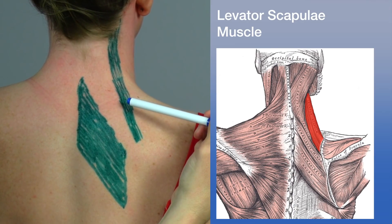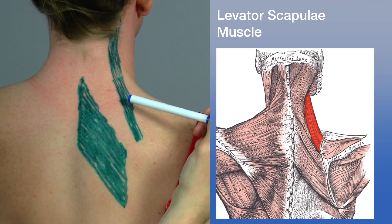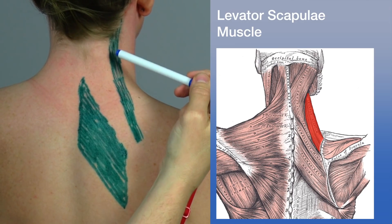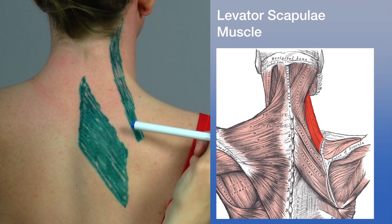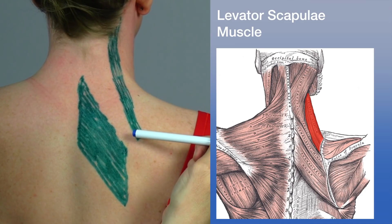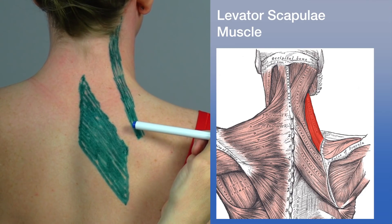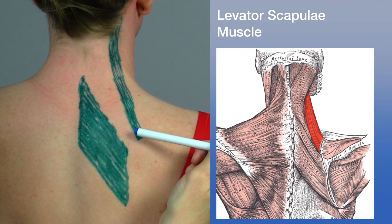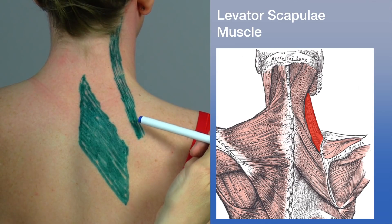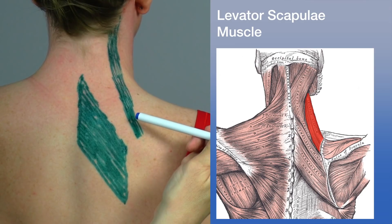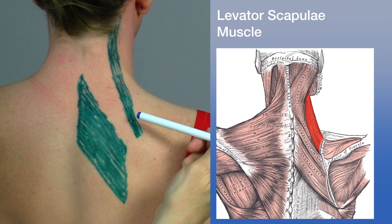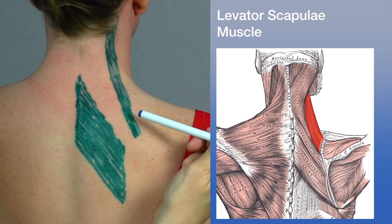The levator scapulae originates from the transverse processes of C1 to C4 and inserts on the superior angle of the scapula. Its actions are elevation of the scapula and downward rotation. When the scapula is fixed, it also acts on the cervical spine.